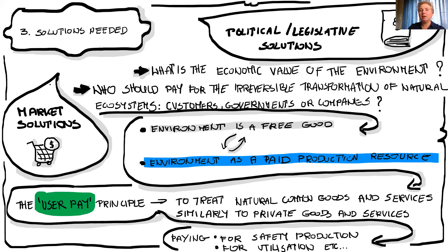You have to pay these costs — for example, for filters or for special organization of production so as not to use resources without paying for them. And another solution: when you do some production and you have waste or effects from your production, you have to take care of the utilization of it.